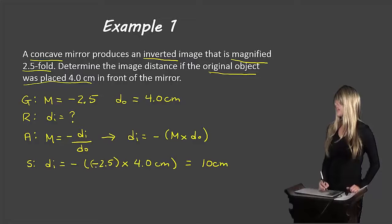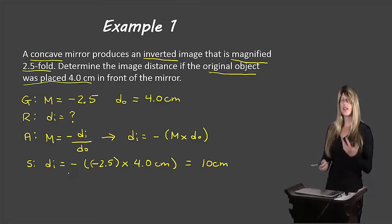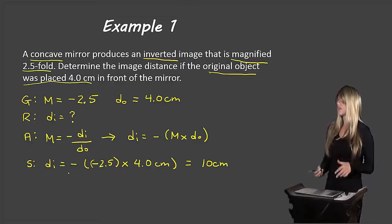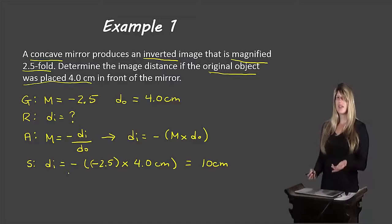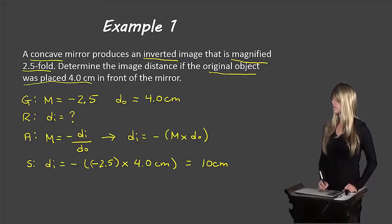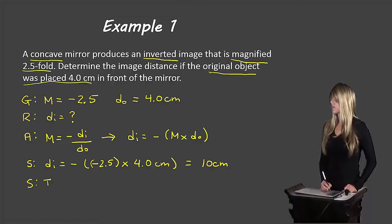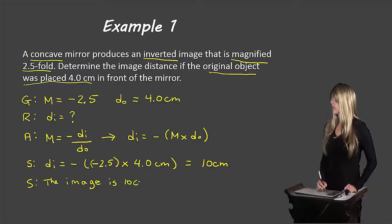Doing that math, we end up with 10 centimeters. Remember, negative times negative is positive, so our DI is positive. The image is 10 centimeters from the mirror.